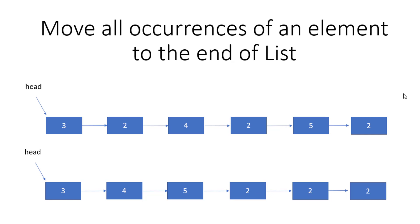So what should be the logic? We will start from the beginning of the linked list and whenever we find that element, we'll move it to the end. First, we should know what the last element is — we'll run a loop while node is not null to find the tail. Once we find the tail, we'll start from the front again, and whenever we find the node — like when we find a 2 — we move it to the end and change the linking of the previous node, like 3 to 4.